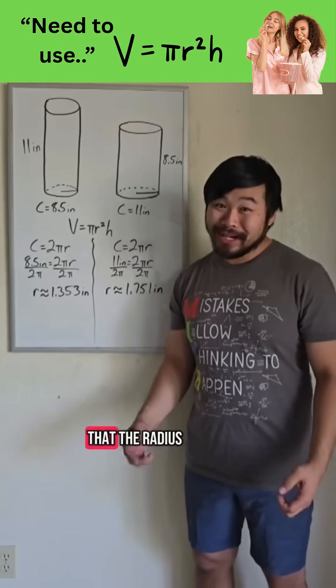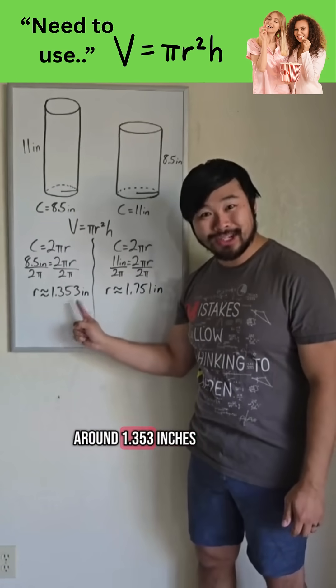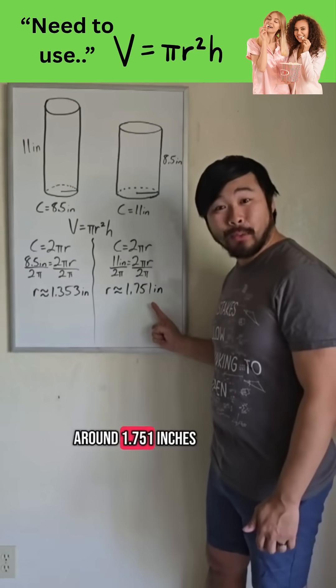And when we do, we see that the radius of the base of the taller, narrower one is around 1.353 inches, and the radius of the base of the shorter, wider one is around 1.751 inches.